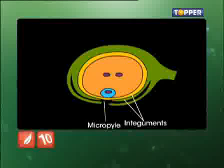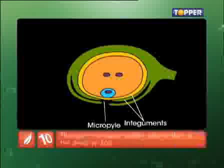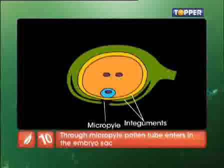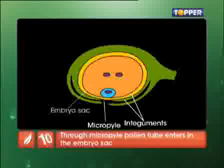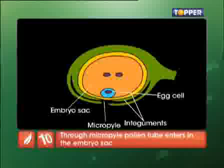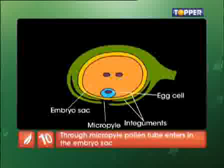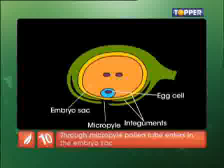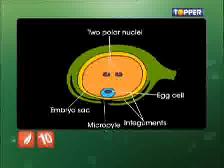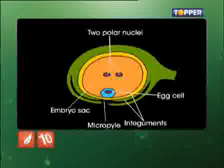And if you see the detailed structure of the ovule, you will find a small structure called an embryo sac, which contains an egg towards the micropyle and also contains two polar nuclei which are located in the center.